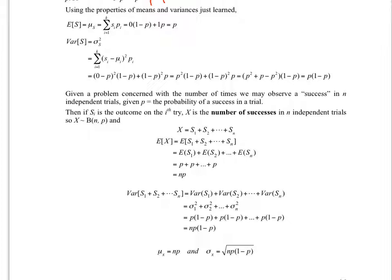From here we have what we'll call the mean of X. I'll put a subscript to remind you that this is for X, the statistic known as the number of successes in independent trials, and its standard deviation as the square root of n times P times 1 minus P.